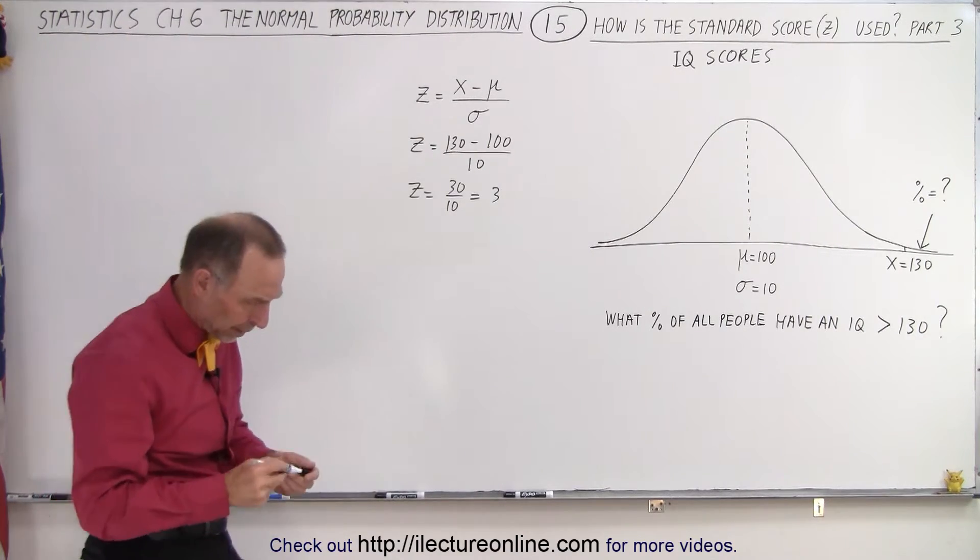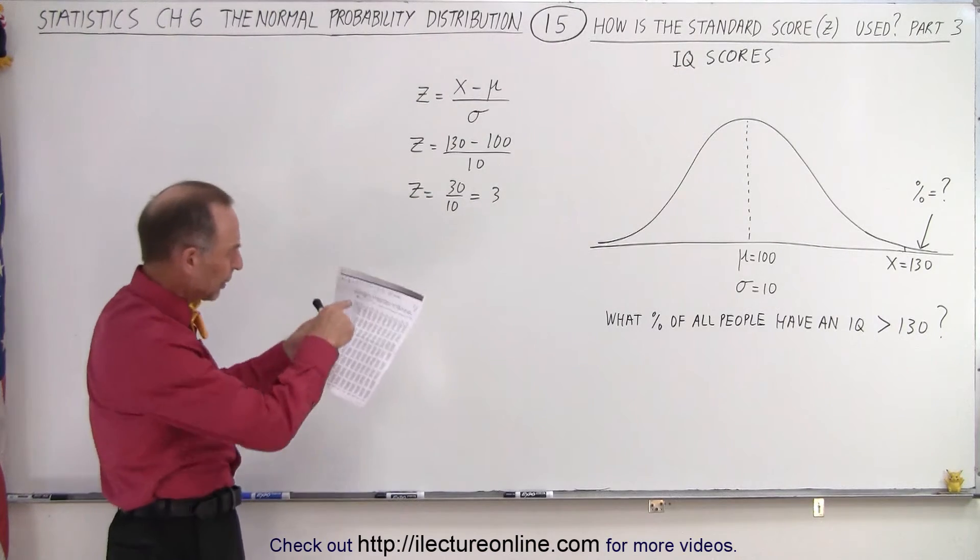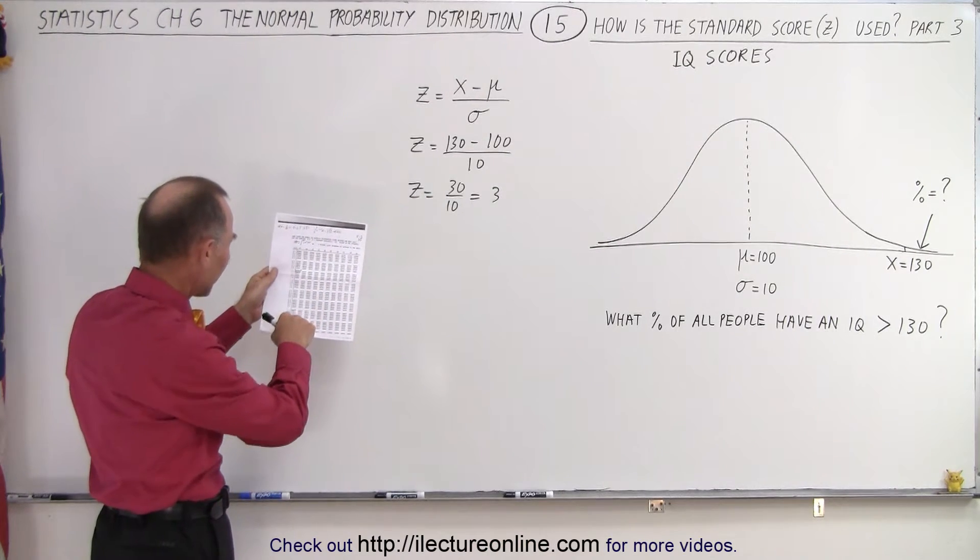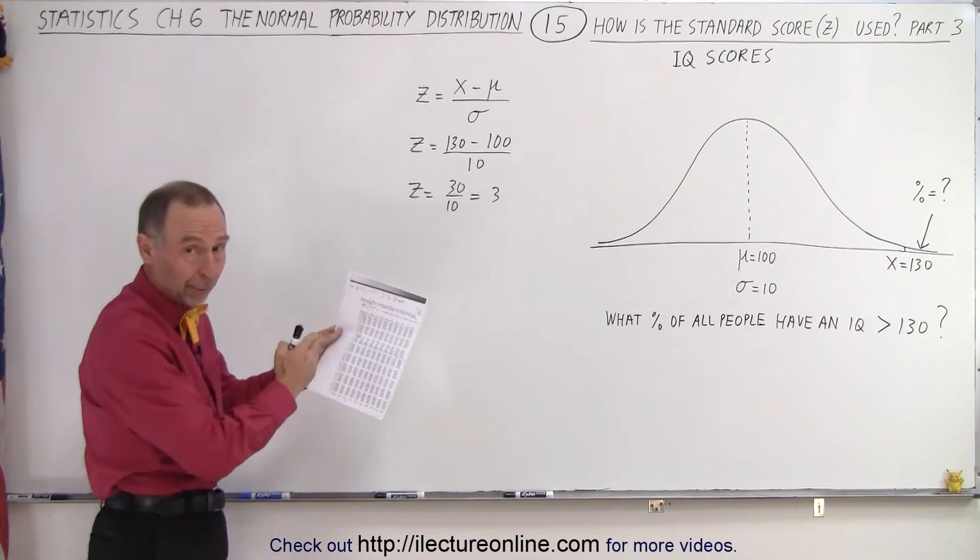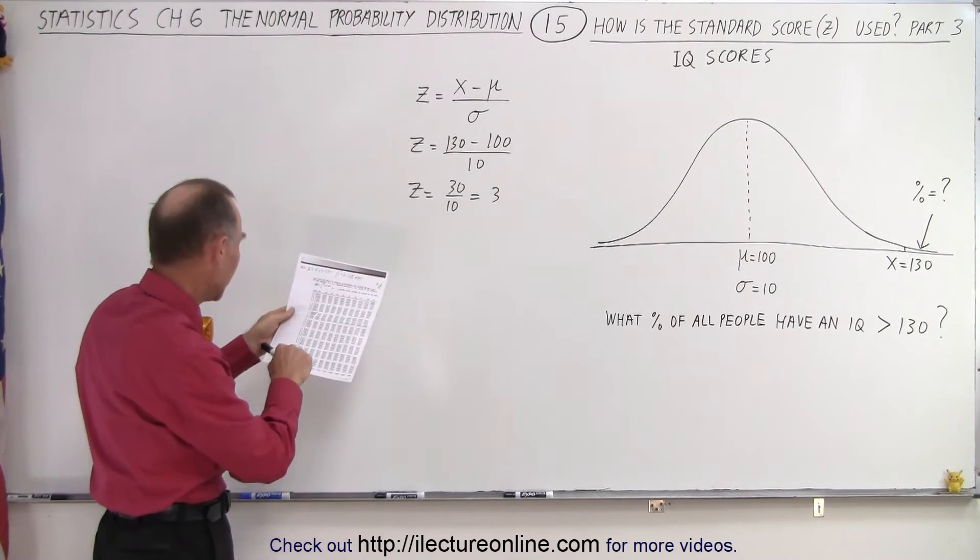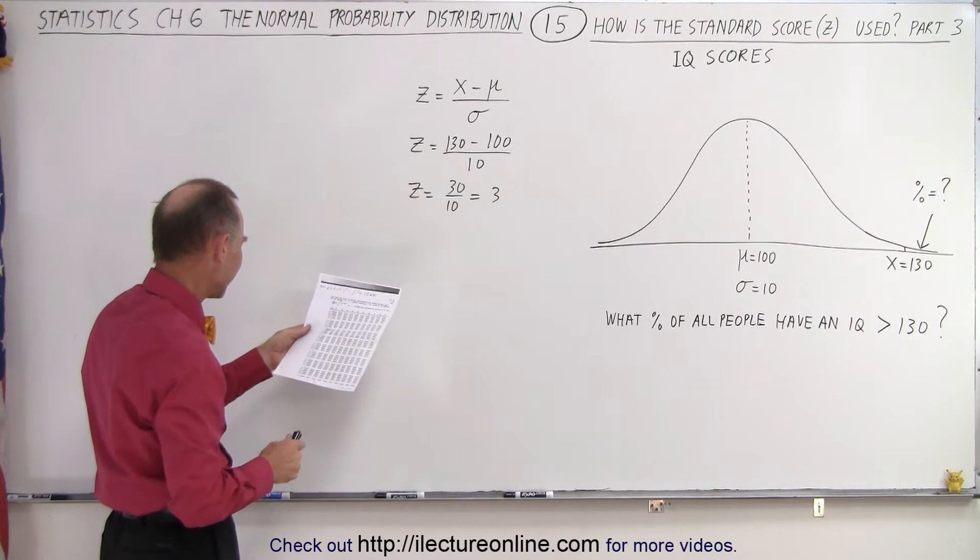the z-score, now we pick up our table right here. We go down the table until we find z equals 3.0. We don't have to go across because it's 3.0, not 3.01 or 3.02. And it tells me here that it's 0.49865.